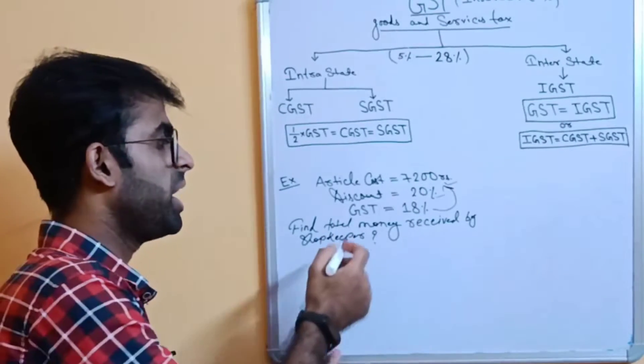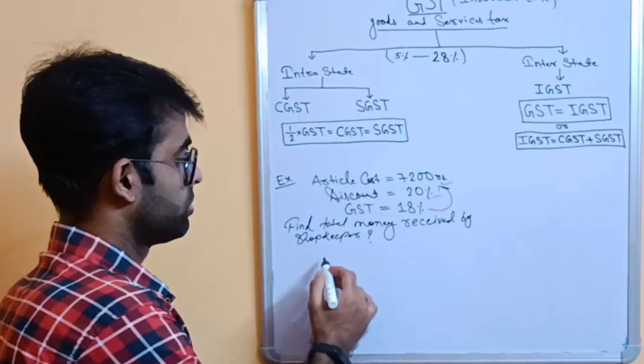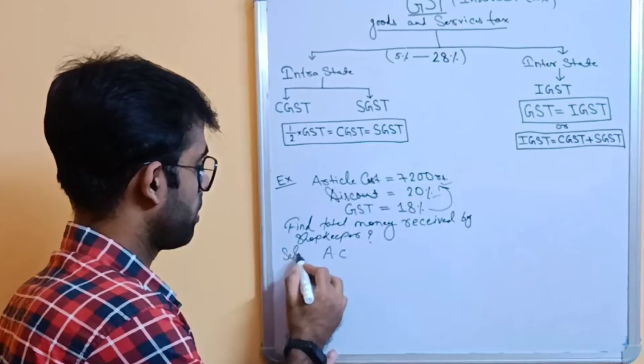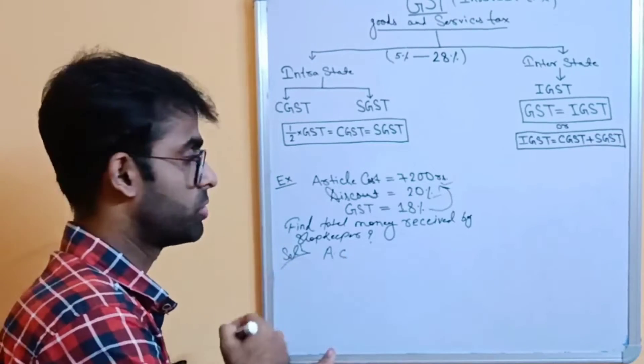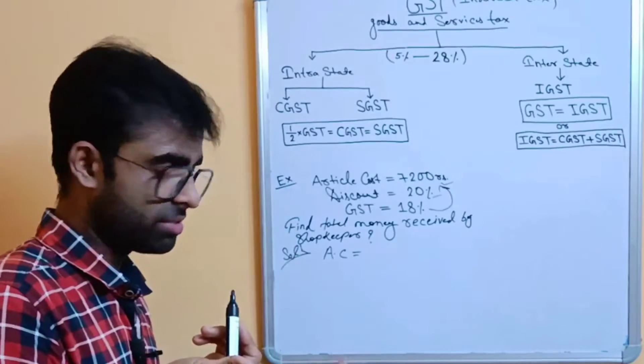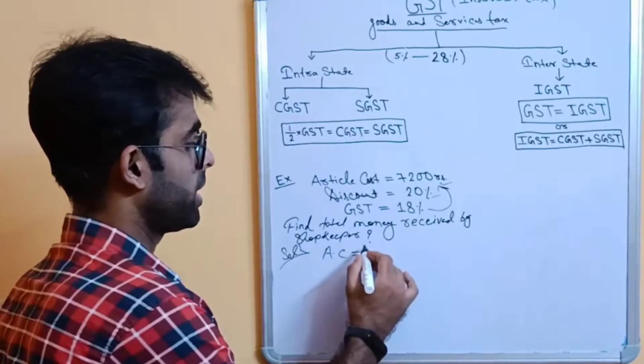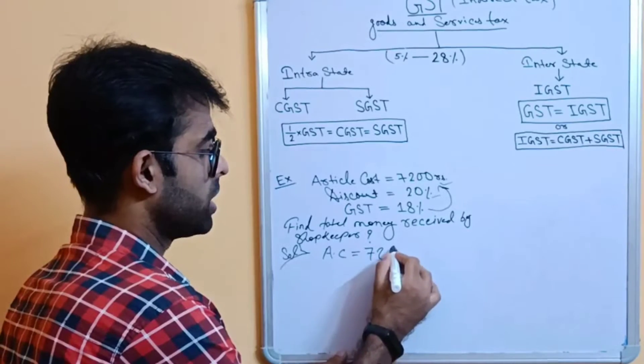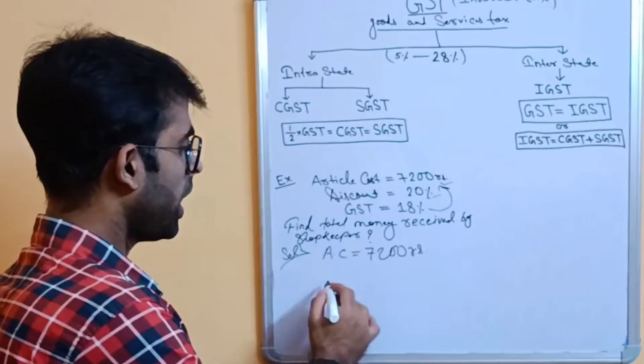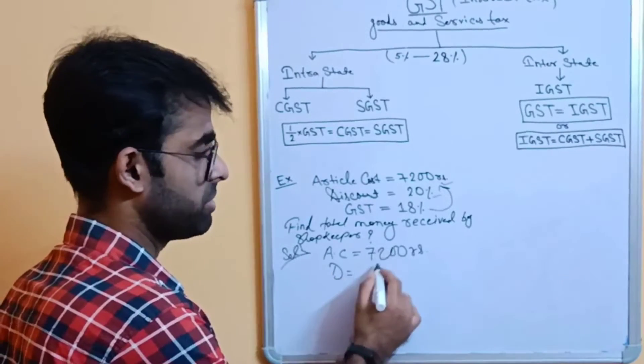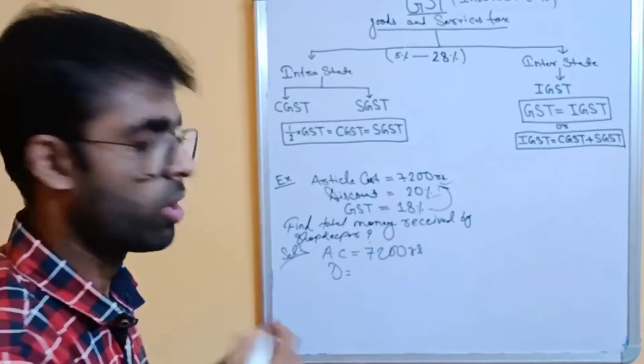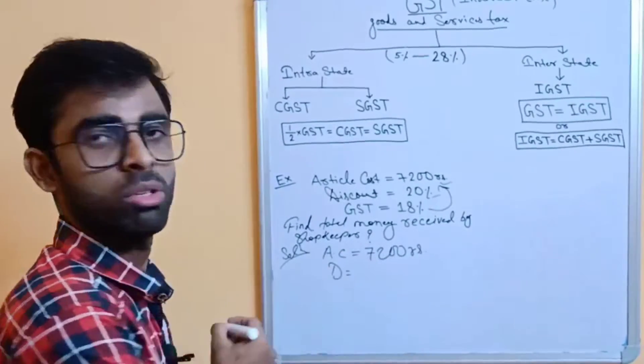So we need to find the total amount of money which is received by a shopkeeper. So, first of all, we need to find the exact amount, the article cost. Look at this solution. If you have any doubt students, then please ask me.